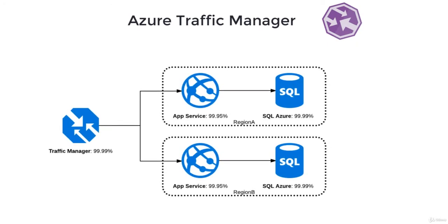Let's say you have virtual machines and web applications running in different regions and different data centers — maybe some in East US and some in West US. With the advent of e-commerce websites, web applications are hosted geographically around the world. An e-commerce application like www.myproducts.com is probably hosted in data centers in North America, Europe, and Australia, with all web servers serving the same purpose: providing products to end users. Load Balancer would not help here because it distributes traffic only to web servers in that particular region.